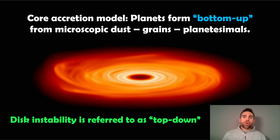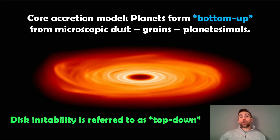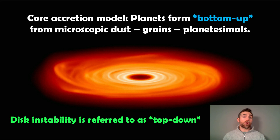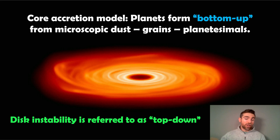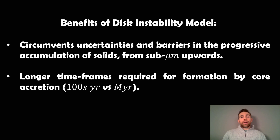The core accretion model is sometimes referred to as bottom-up, because you're growing from smaller objects that accumulate and grow from collections of smaller and medium-sized objects. The disk instability model is referred to as top-down, because you go straight from the disk to a planet without all those intermediate steps — that's why it's faster.